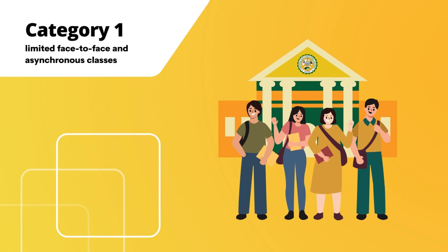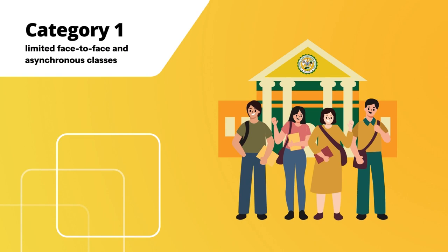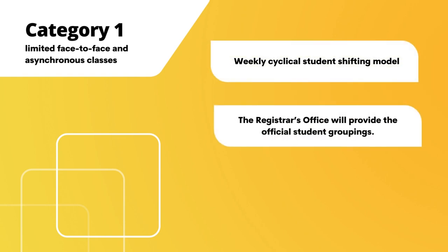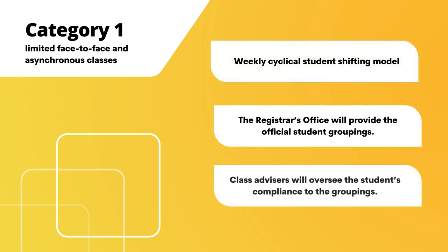Category 1 classes will proceed with limited face-to-face classes following the recommended groupings and protocols. The weekly cyclical student shifting model will be implemented during the conduct of the limited face-to-face classes. Prior to the commencement of classes, the Registrar's Office will provide the official student groupings to be posted by the colleges and departments in their respective social media groups or pages. Class advisors will oversee the students' compliance to their groupings.